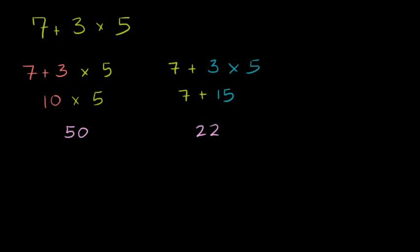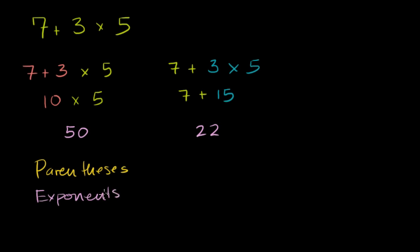The agreed-upon order of operations is: do parentheses first, then exponents — and if you don't know what exponents are, don't worry about it for now, we won't have any in our examples. Then do multiplication and division next — they have the same level of priority. And finally, do addition and subtraction.